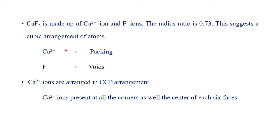Ca²⁺ ions have a CCP (cubic close-packed) arrangement, and F⁻ ions occupy the voids. CCP arrangement means Ca²⁺ ions are present at all corners as well as the center of each face — this is the same as face-centered cubic (FCC). Each corner atom is shared with 8 other cubes, and each face-center atom is shared with 2 cubes.